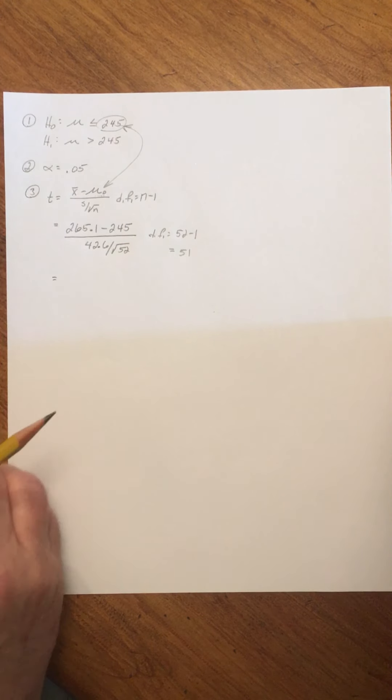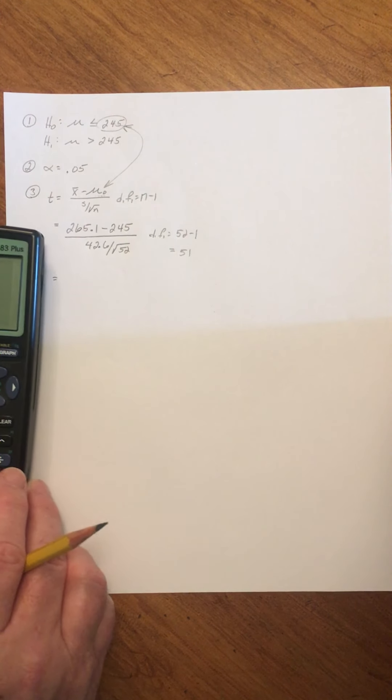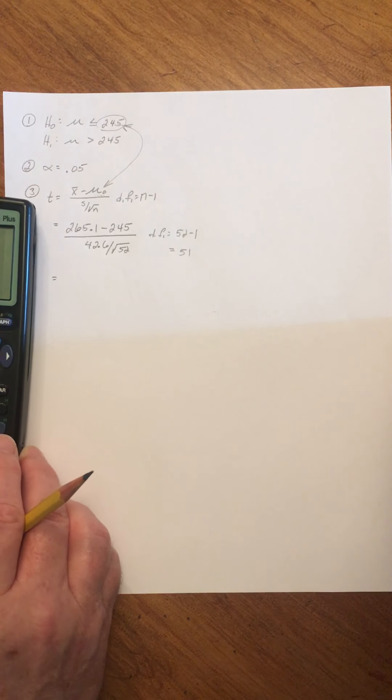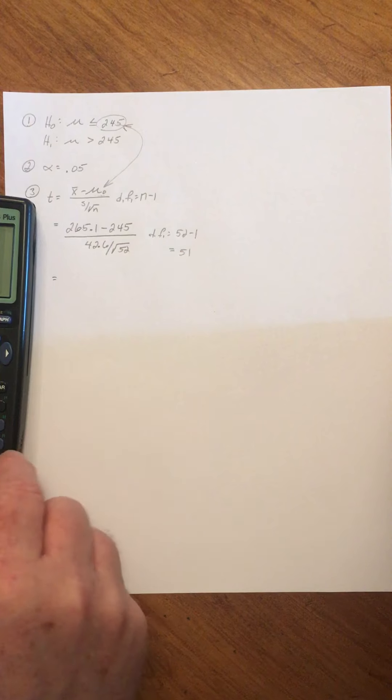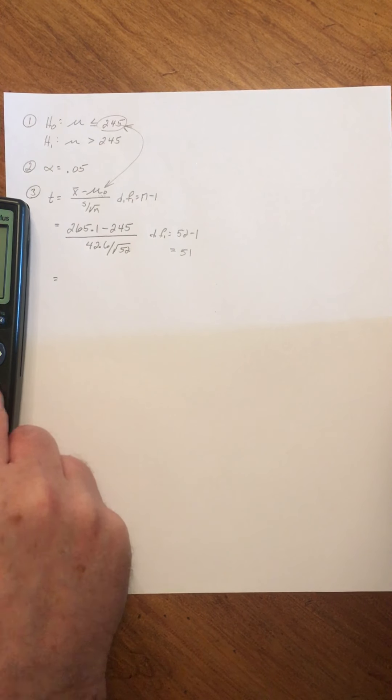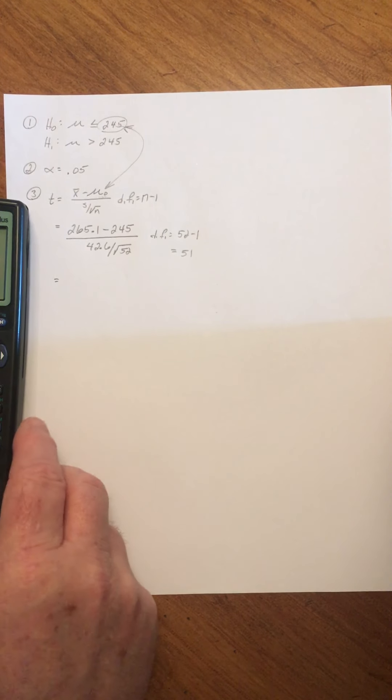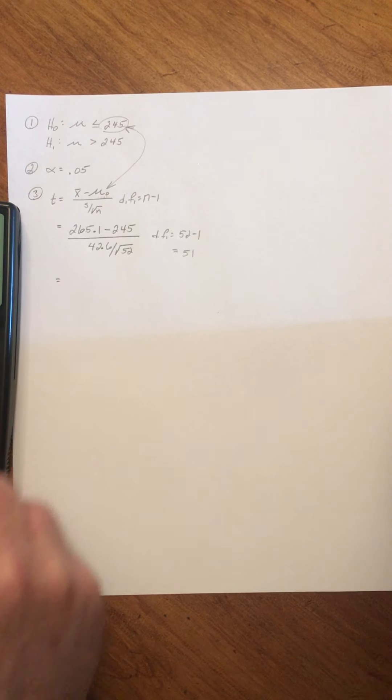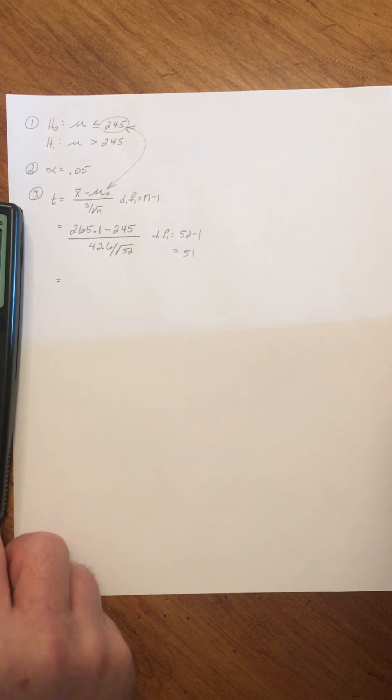And so now I can get my calculator I have out here. We're going to finish off step 3 and we're going to proceed with step 4 of finding the p-value. So let's see. 265.1, and then we're going to subtract 245, and then divide that by 42.6.